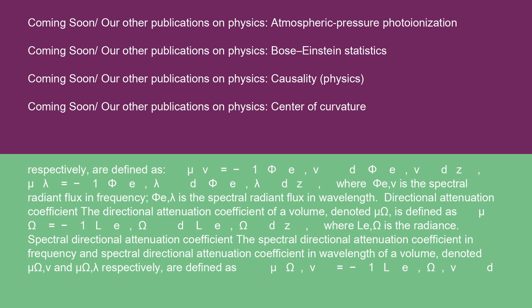The directional attenuation coefficient of a volume, denoted μ_Ω, is defined as μ_Ω = −(1/L_{E,Ω})(dL_{E,Ω}/dz), where L_{E,Ω} is the radiance.